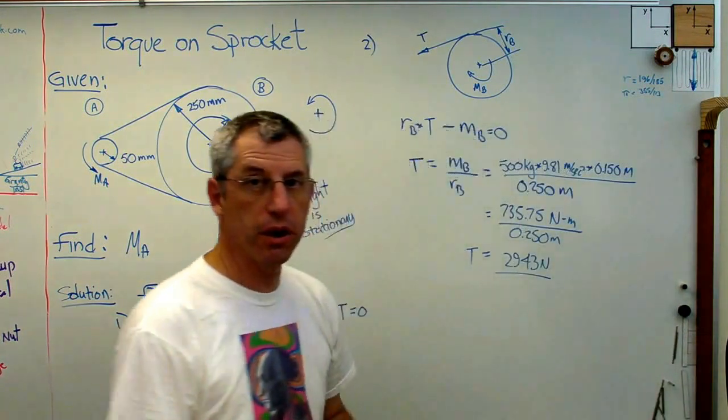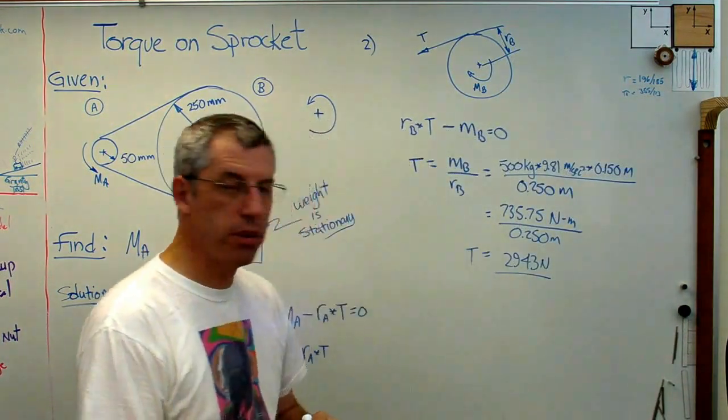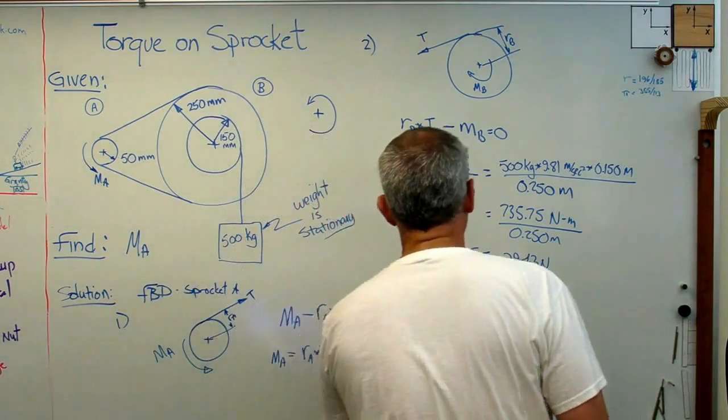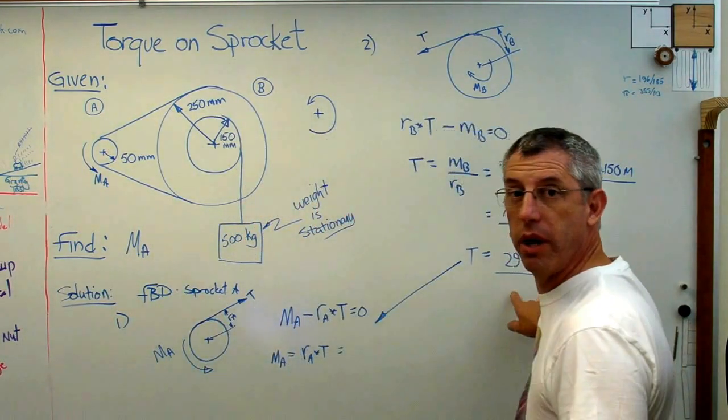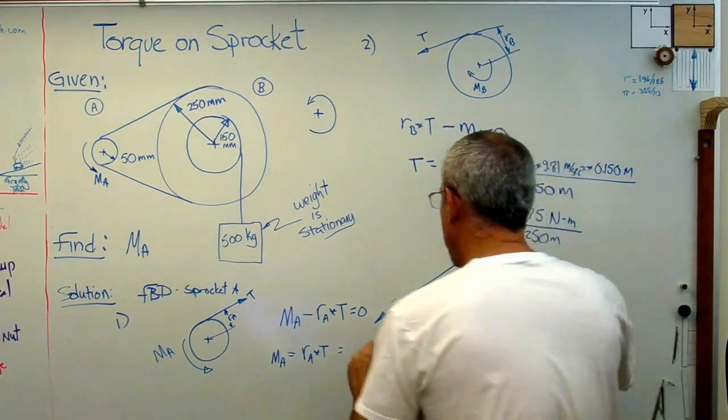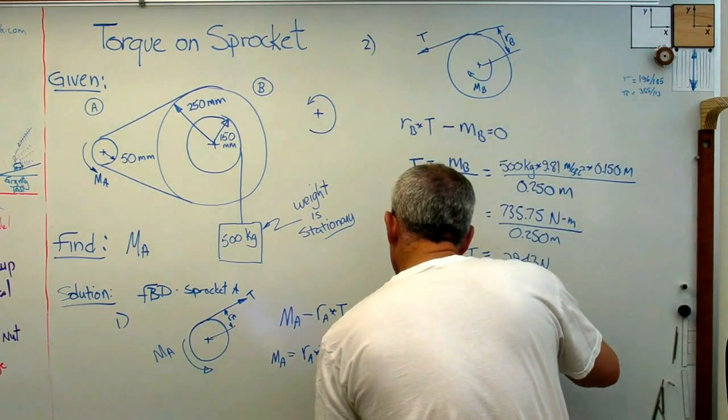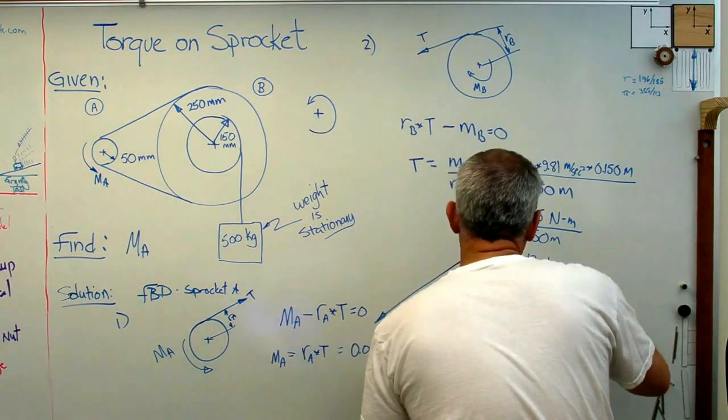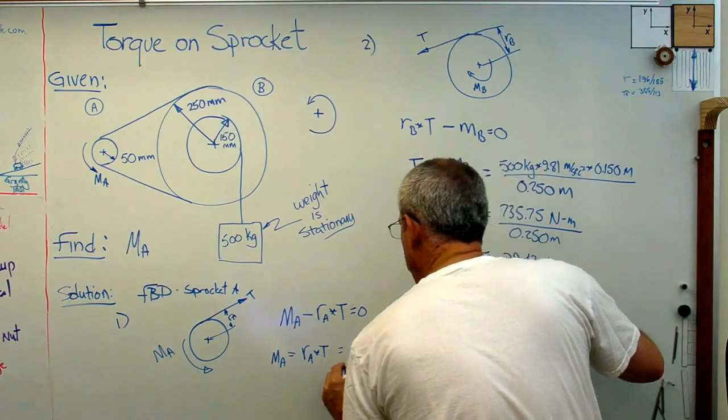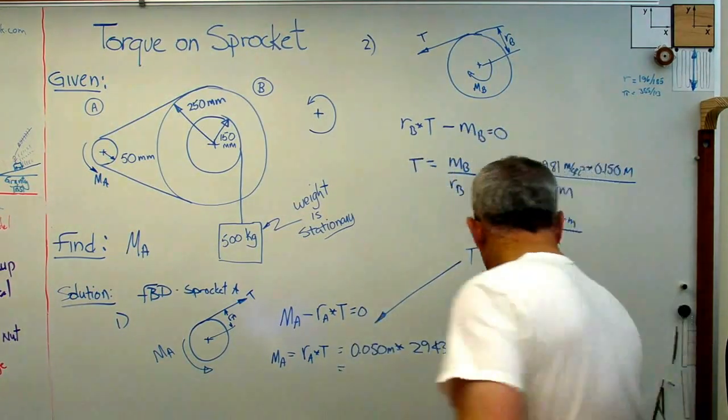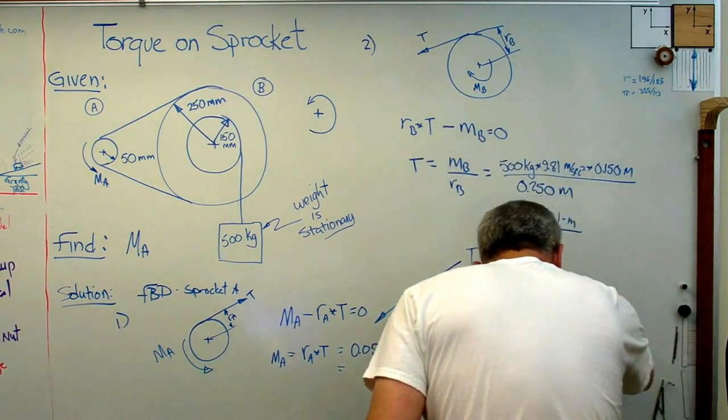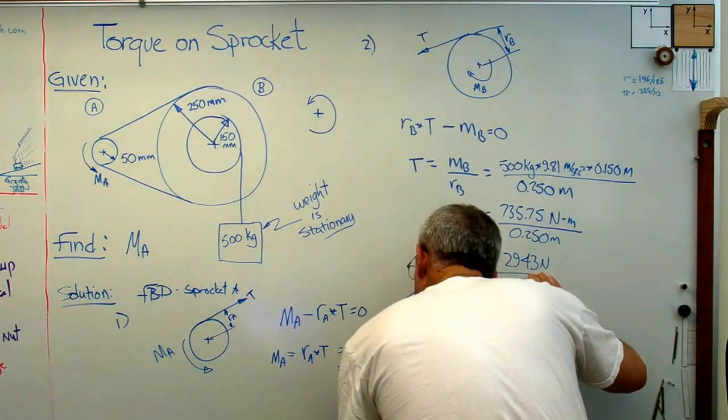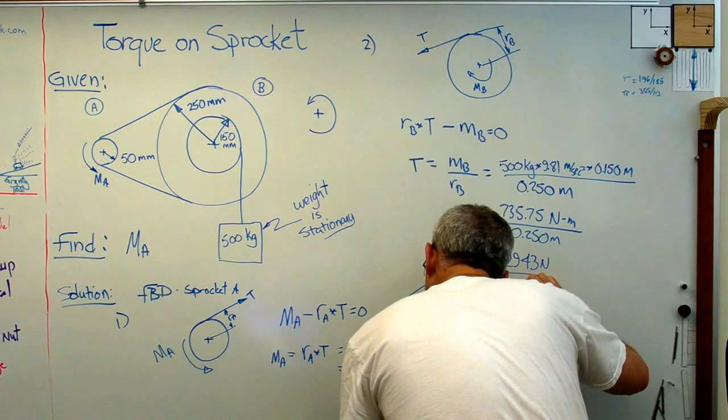And that's going to work out to 2943 newtons. That's t. Well, that's a good thing to know. So it's important there, so I'm going to put an underline under it. That's an intermediate result. Now, I can go back down to here and I can put the number I just calculated into the equation I had before. 0.050 meters times t, which I now know, 2943 newtons. And if I work that out, I'm going to stay in frame. I'm going to get 147.15 newton meters.